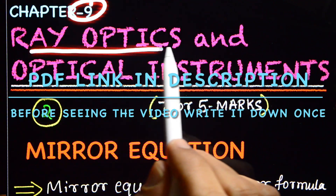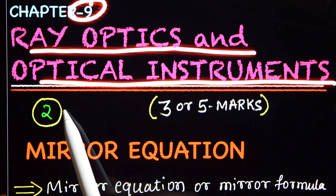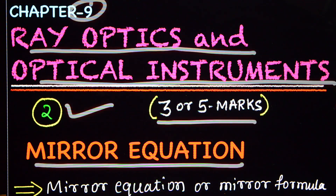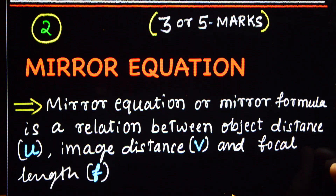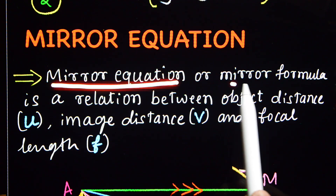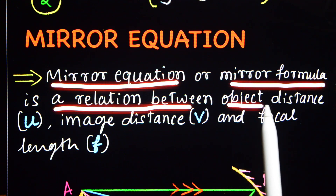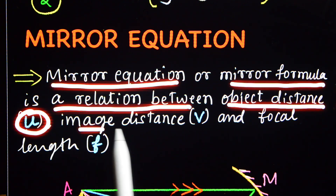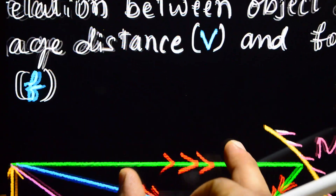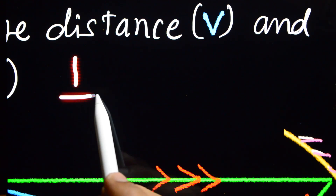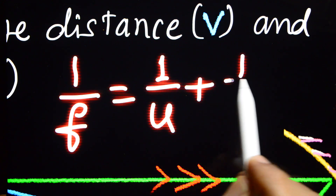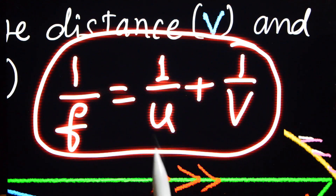Chapter 9: Ray Optics and Optical Instruments. This is the second topic: Mirror Equation. This may be a 3 or 5 marks topic. First, you need to write the mirror equation. The mirror equation is a mirror formula — it is the relation between object distance u, image distance v, and focal length f. We need to derive that 1/f = 1/u + 1/v. This is the mirror equation.